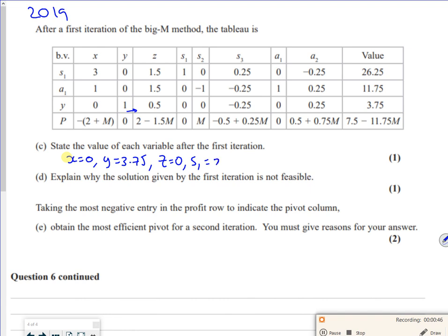S1 is 26.25. S2 is 0. S3 is 0. A1 is 11.75, and A2 is 0. So that's quite interesting,